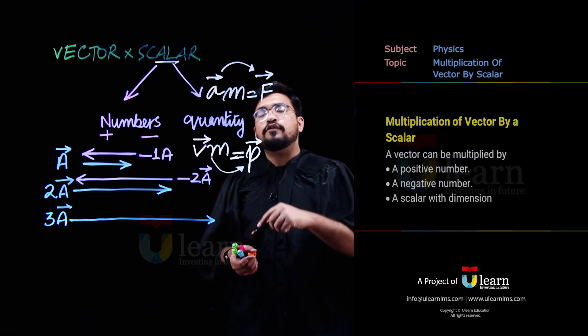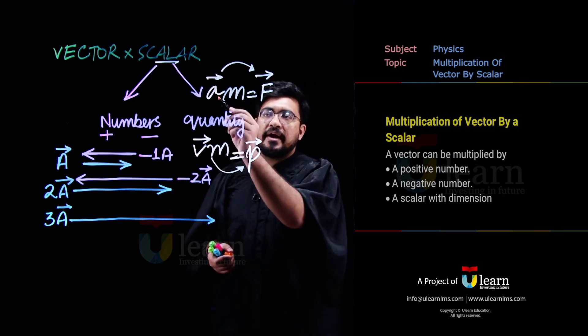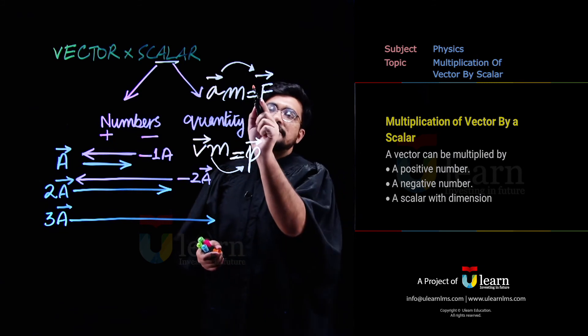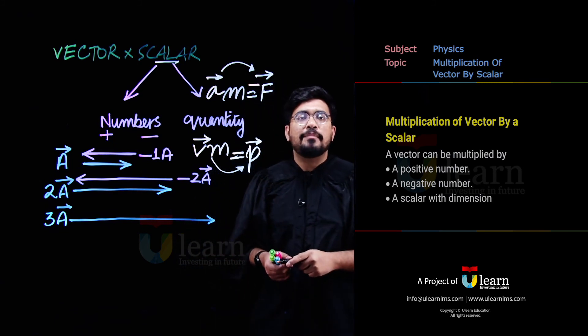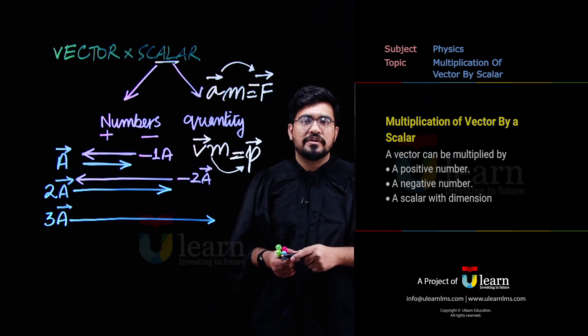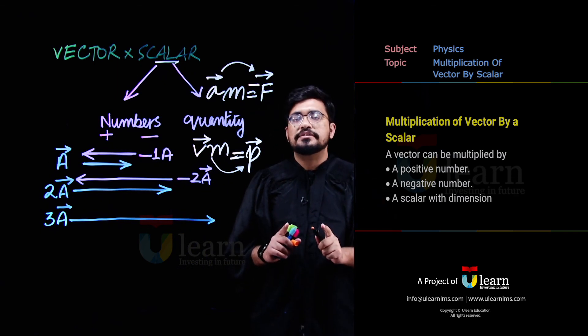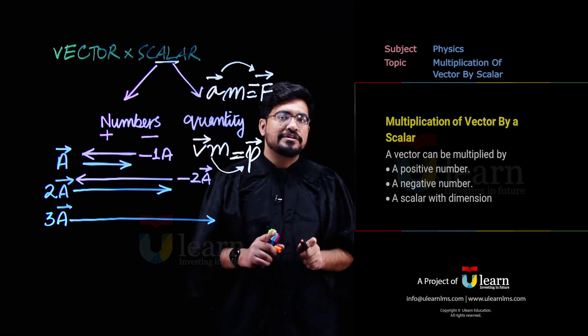Agar what if quantity negative ho ti, yaani mai isse minus m se multiply karta, toh answer negative aata, yaani ab aapke paas us vector ki direction bhi reverse ho jati. Toh negative sign is always meant for the reversal in direction.